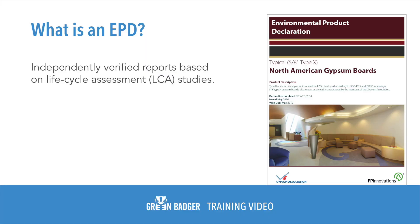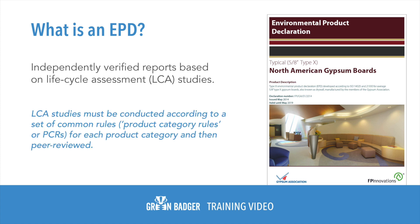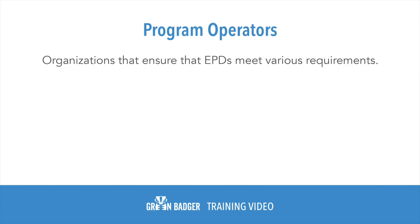First, what is an EPD? Environmental product declarations are independently verified reports based on the life cycle assessment, or LCA, of the product. The LCA studies must have been conducted according to a set of common rules known as product category rules, or PCRs. These must then be peer-reviewed. EPDs are managed and created by program operators — organizations that ensure that the EPDs meet the various requirements.